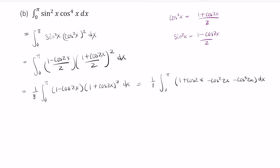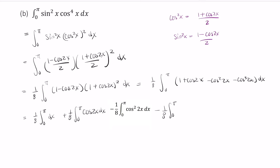Let's split this up and make it more straightforward by not tackling it as one integral. We'll rewrite this as four separate integrals: 1/8 times the integral from 0 to pi dx, plus 1/8 times the integral from 0 to pi of cosine 2x dx, minus 1/8 times the integral from 0 to pi of cosine squared 2x dx, minus 1/8 times the integral from 0 to pi of cosine cubed 2x dx.